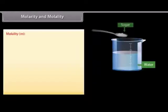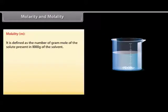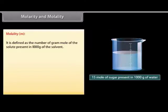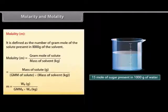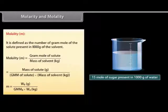Molality is defined as the number of gram moles of the solute present in 1000 grams of the solvent. It is represented by small m. Mathematically, molality m is equal to W_B in grams divided by the product of gram mole mass of B and W_A in kilograms. A solution containing 1 mole of solute per 1000 grams of solvent has molality equal to 1 and is called a molal solution.